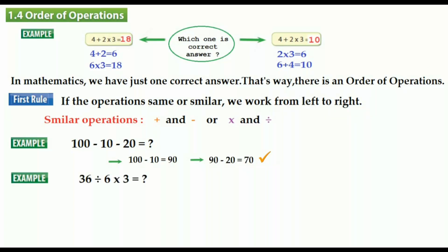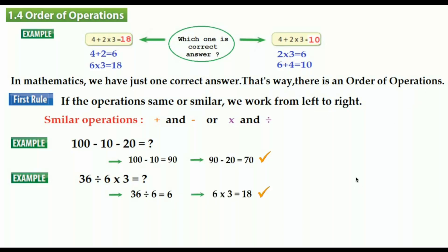Another example: 36 divided by 6 times 3. We have division and multiplication — these are similar operations. So we work from left to right. 36 divided by 6 equals 6. Then 6 times 3 equals 18. That's it.